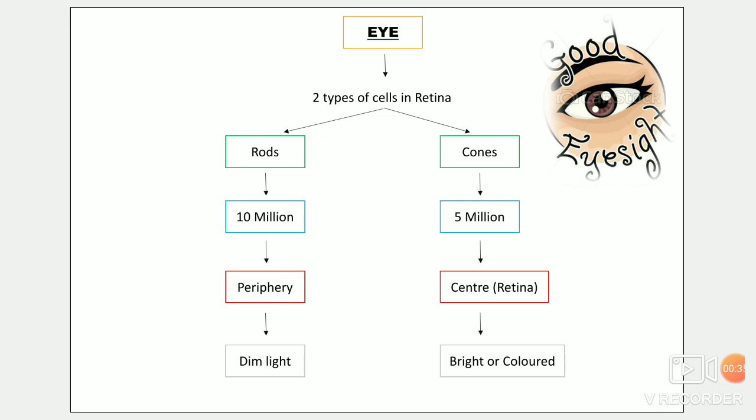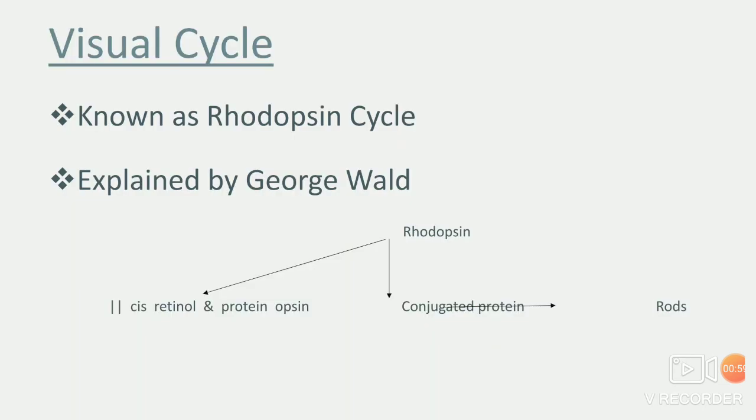Retina में दो type के cells होते हैं: rods and cones. Rods होते हैं 10 million, cones होते हैं 5 million. Rods हमेशा periphery में situated होते हैं और cones center में. Rods dim light में काम करेंगे और cones bright light में.